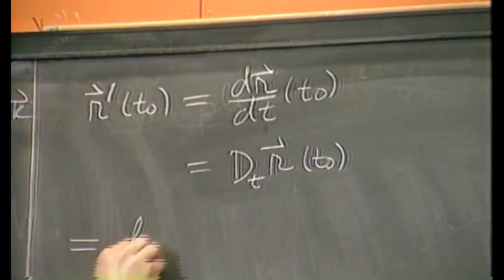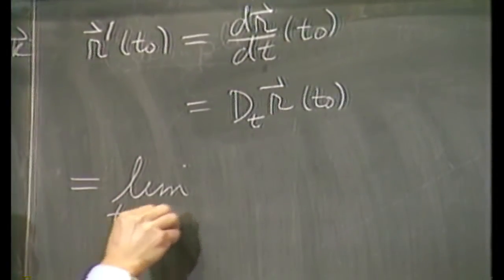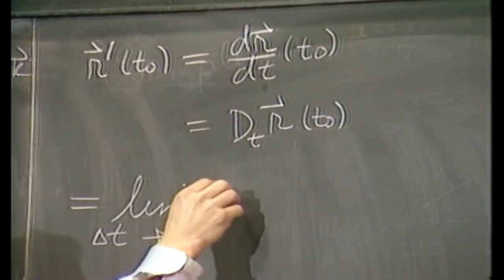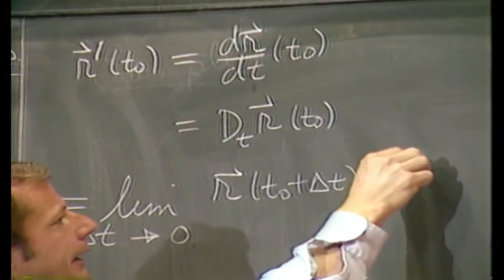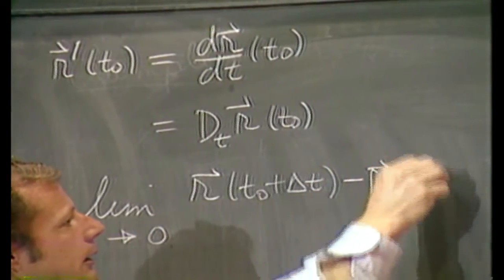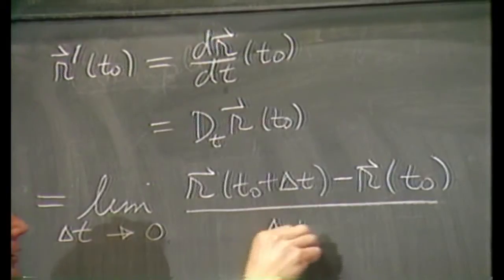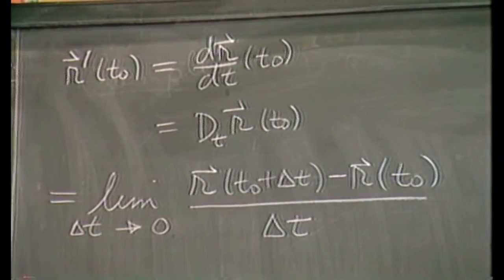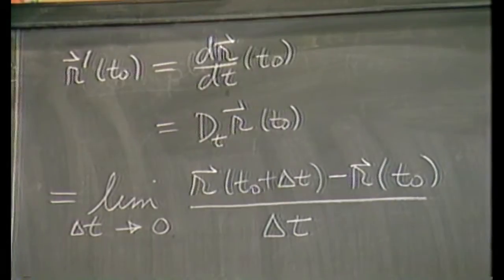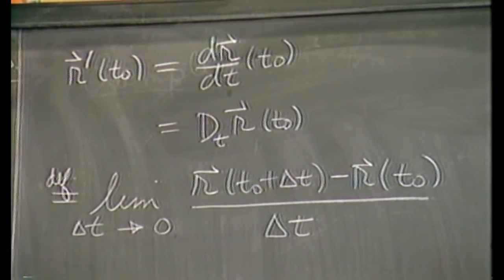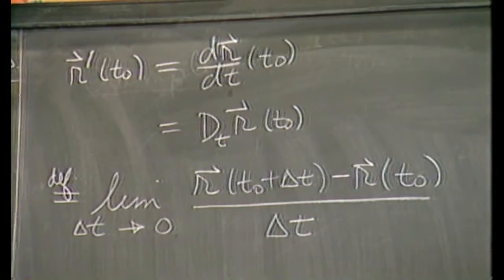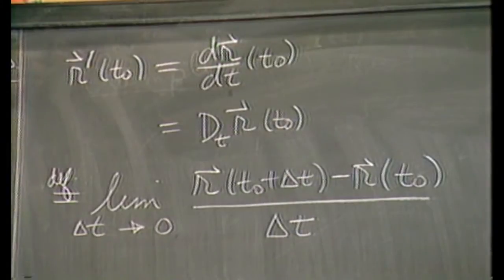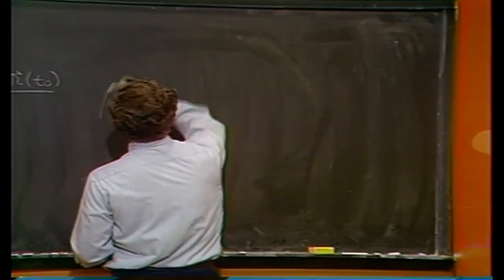Now, what this was defined to be is a direct carryover from your calculus one definition. You take r at some later time minus r at that fixed time you're interested in and divide that by the change in time. Okay, that's the definition. Well, that's good, but that doesn't really help you much. It didn't in calc one either. I mean, it didn't help you actually compute derivatives. It told you what they were. Okay, so let's see what a vector derivative is supposed to look like.